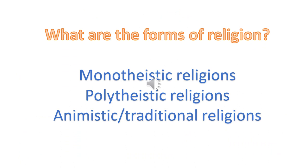So what are the forms of religion? There are monotheistic religions, polytheistic, and animistic religions, which are traditional.